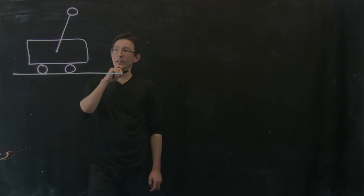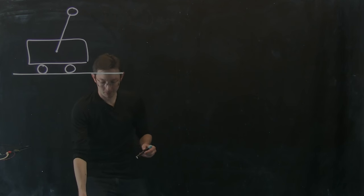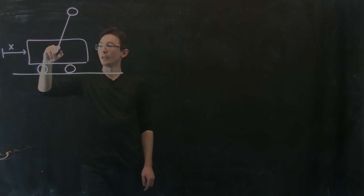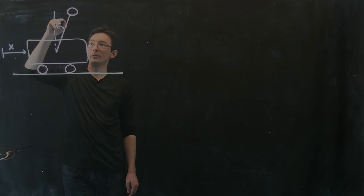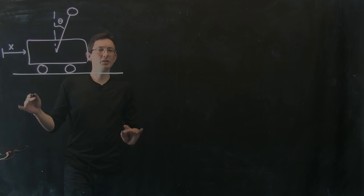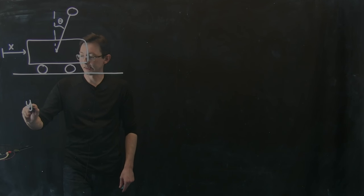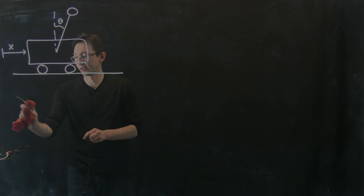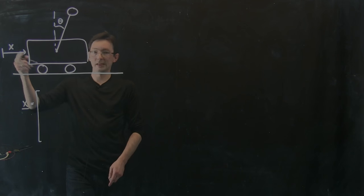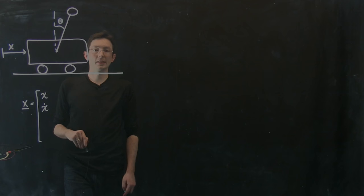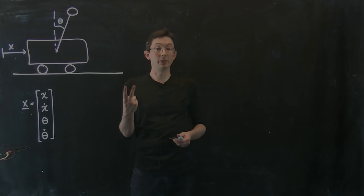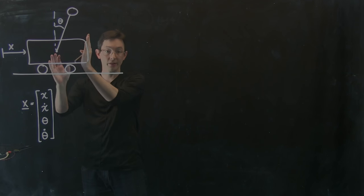Let's think about what numbers we need. First we need to define the state of the system. The position of this cart we're going to call x, and the angle of this pendulum arm we're going to call theta. The state vector x consists of: position x, velocity x_dot, angle theta, and angular velocity theta_dot. This is a two degree of freedom system — x and theta, the position of the cart and the angle of the pendulum.